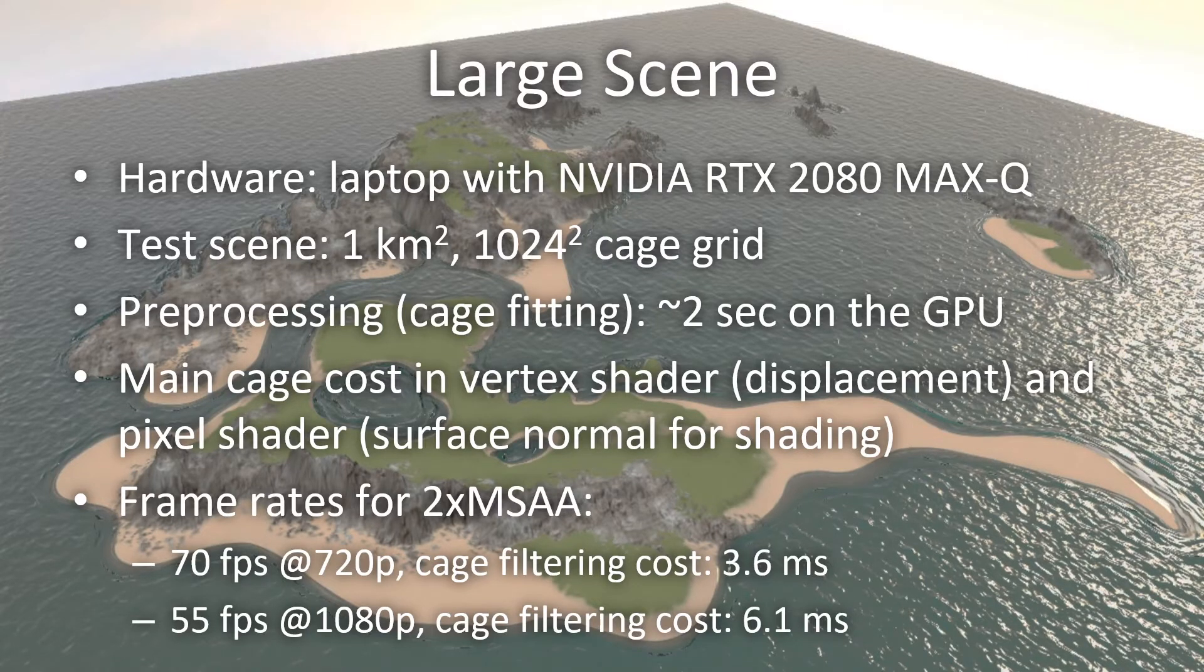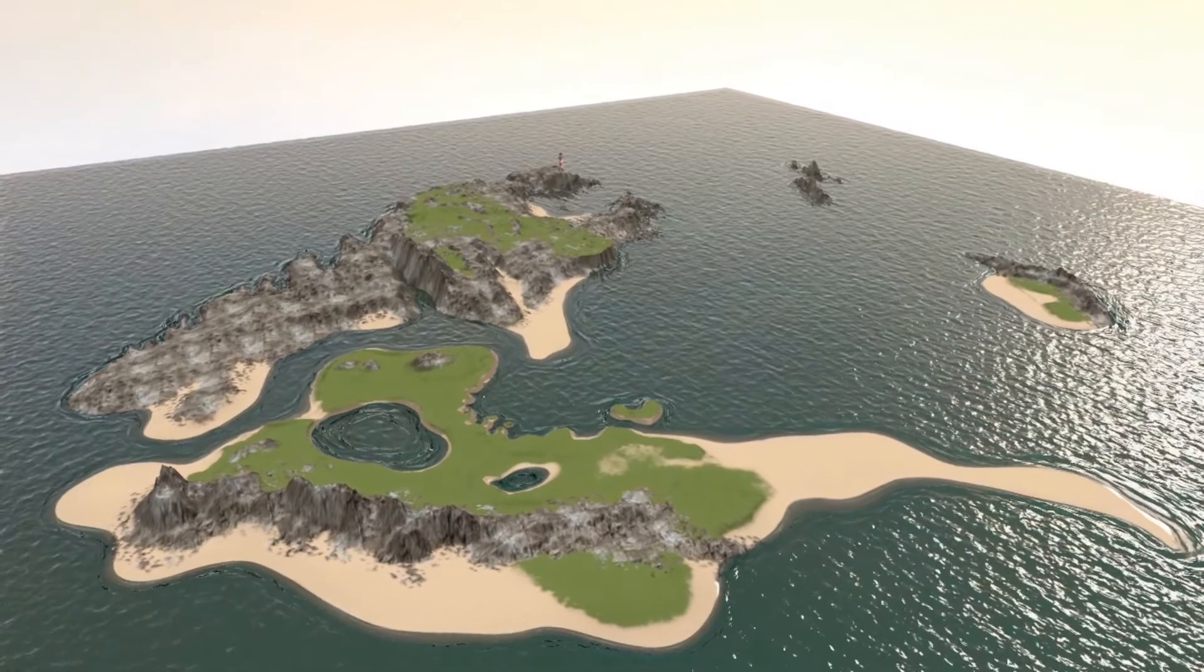Here is a more complex scene, where we tested our implementation on a laptop with a decent GPU. For the 1x1 km scene that you see here in the background, we arranged wave cages in a 1024 square grid. Pre-processing all cages took about 2 seconds on the GPU. We based our implementation on the water surface wavelets technique proposed in 2018, which allows it to locally steer procedural waves, to align it with a beach for example. The computational cost of the cage filtering at runtime mostly happens in the vertex shader for the water mesh displacement, and in the pixel shader for the surface normal that is needed for shading. One can see that we maintain real-time frame rates at common resolutions, with 2x multi-sampling anti-aliasing enabled.